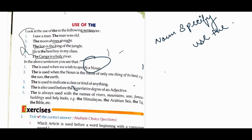So where is fifth? 'The' is always used with the names of rivers, mountains, seas, buildings and holy books, etc. The Himalayas, the Arabian Sea, the Taj, and the Bible. Look - holy books, like rivers, mountains, seas. These are big things, right? And for holy books we use 'the' there too.